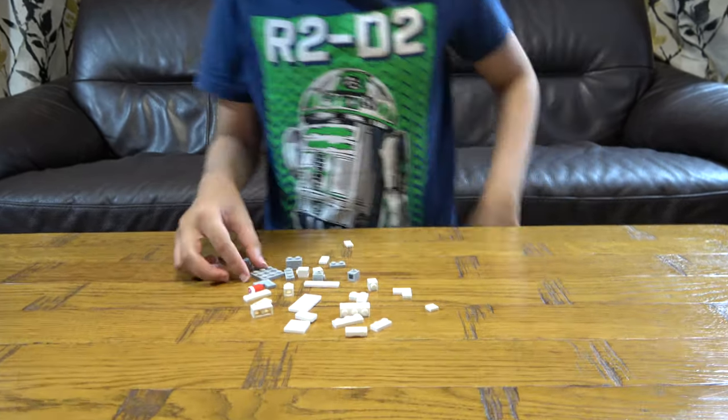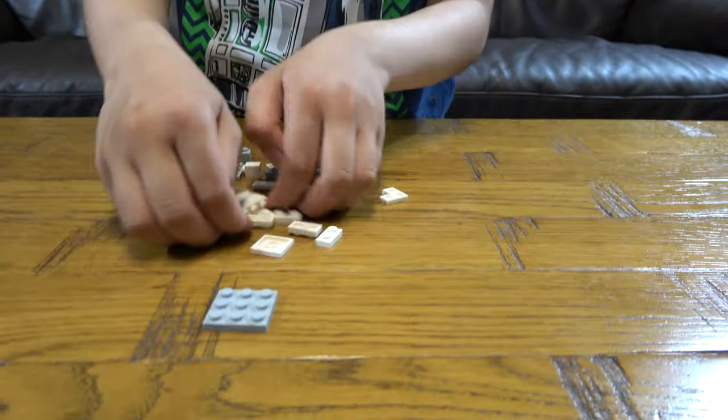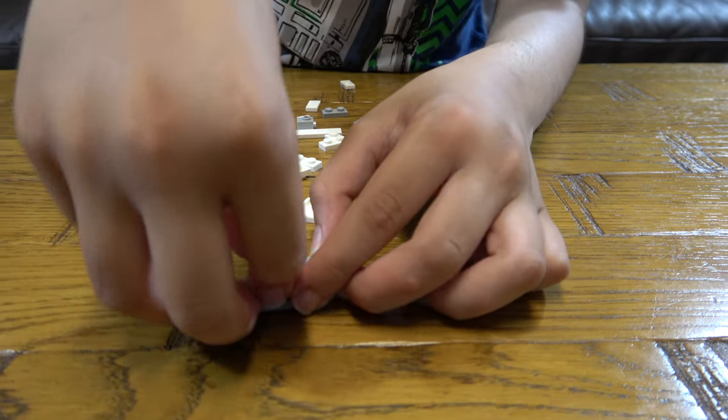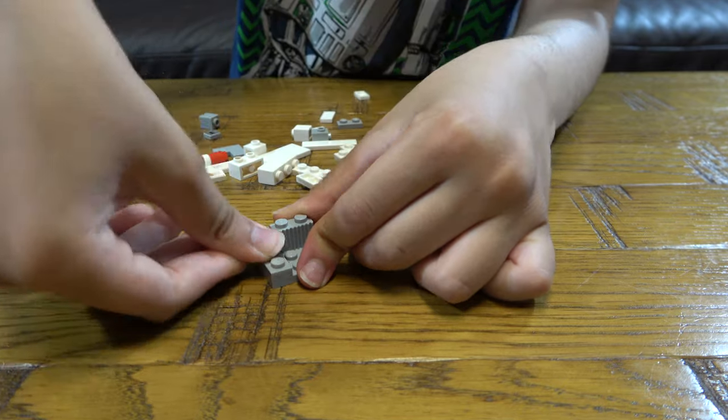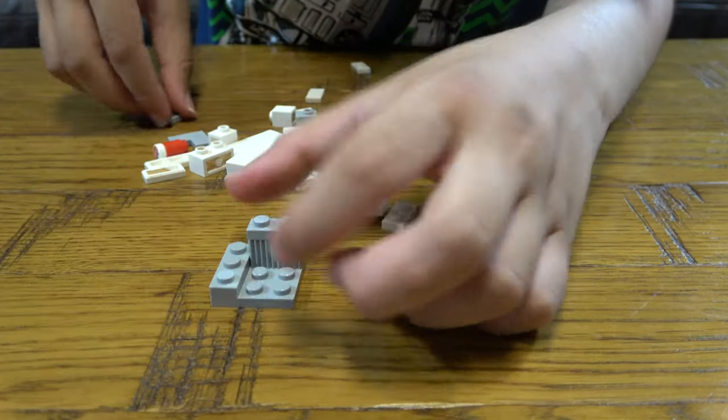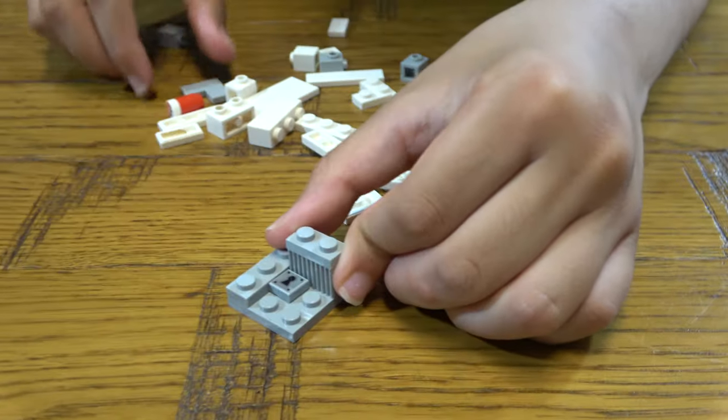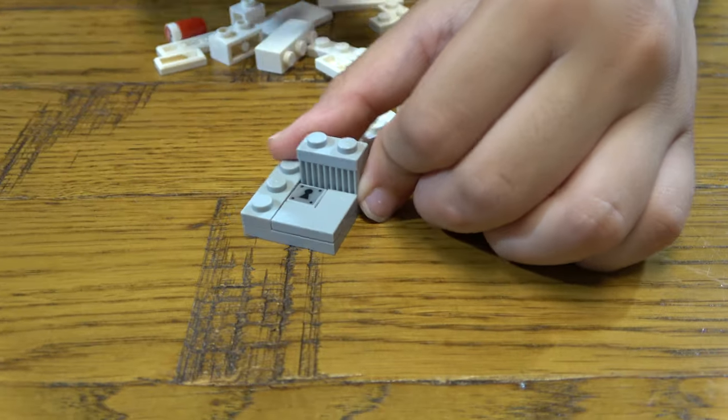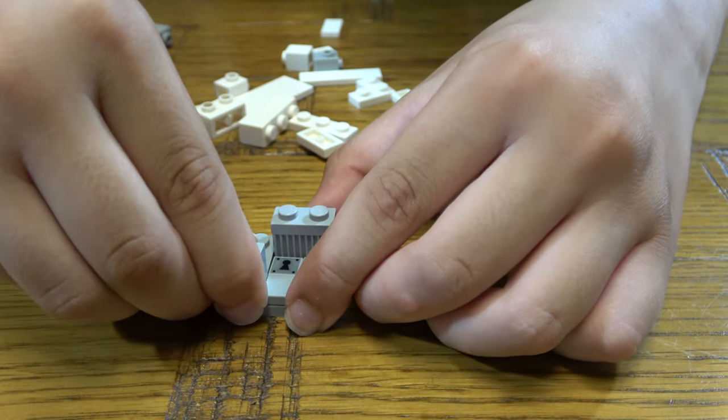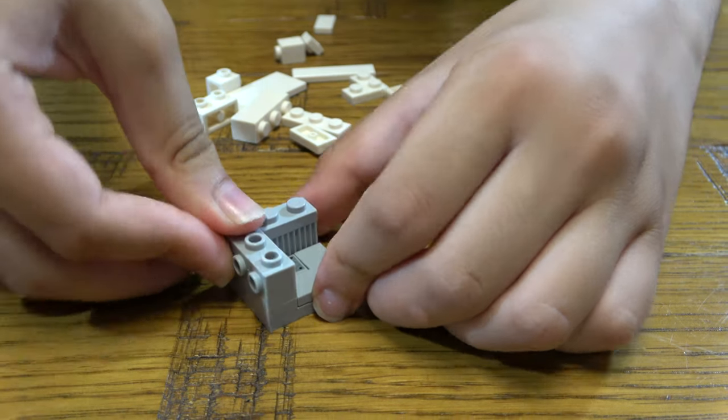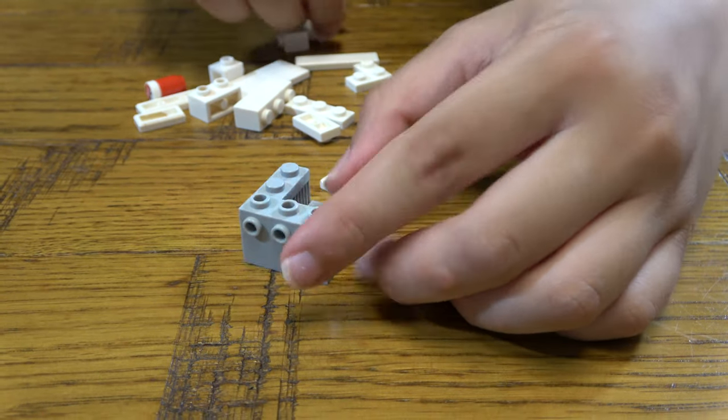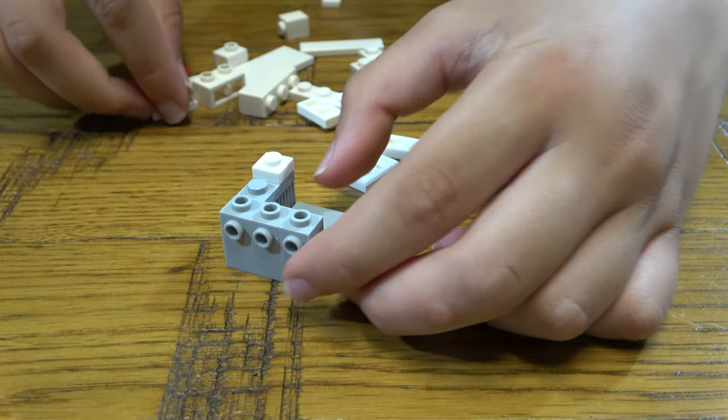First we're going to get this. I'm going to place that there, this over here, this on top, that there, this in the corner, three of these—one, two, three. Next we're going to place this over here like that.